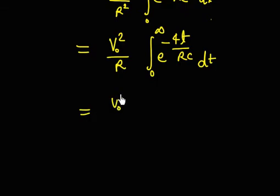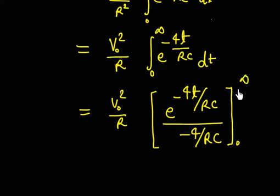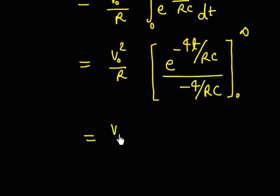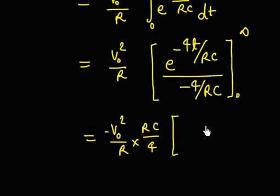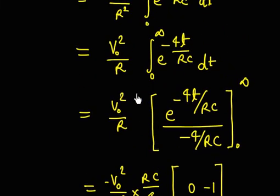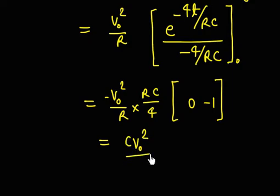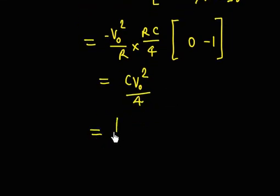Evaluating: Q = (V0²/R) · ∫₀^∞ e^(−4t/RC) dt. The integral of e^(−4t/RC) is e^(−4t/RC) divided by the coefficient (−4/RC), evaluated from 0 to ∞. At infinity the term is 0; at 0 it is −1, so we get minus minus plus 1. This gives (V0²/R) · (RC/4) = CV0²/4.